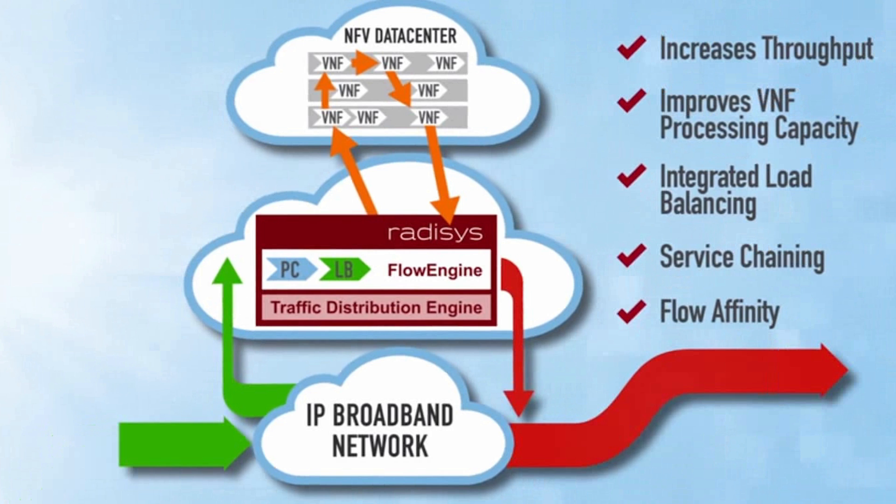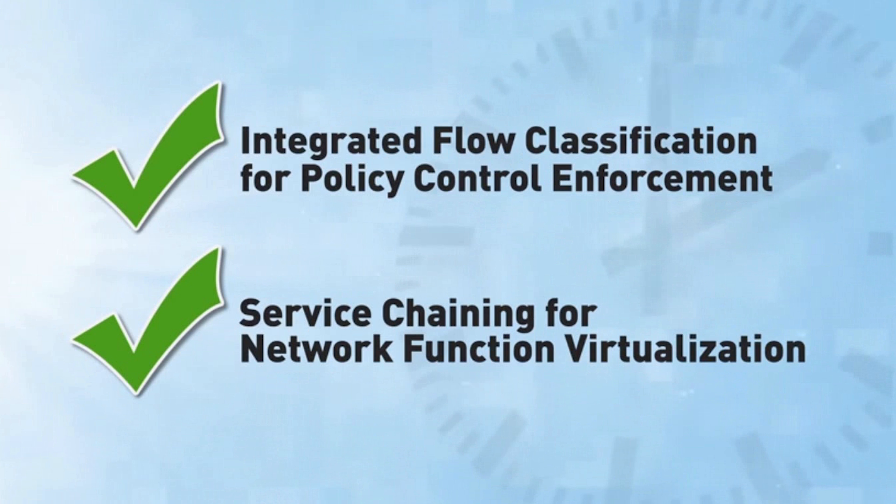Flow Engine is an SDN-driven network service platform. We focus directly on data plane services — on the network services itself — and that allows us to focus on all the different ways to manipulate flows, whether that's flow classification, load balancing, chaining of services, or packet filtering.